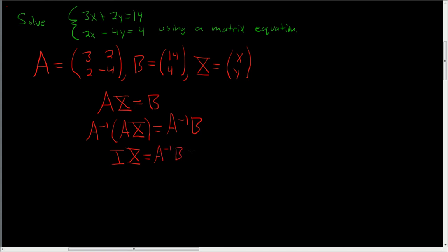So capital X is A inverse times B. Now in a previous video, we found the inverse of A. So capital X is equal to the inverse of A, which was 1/4,